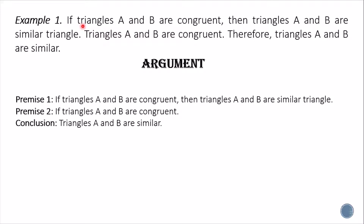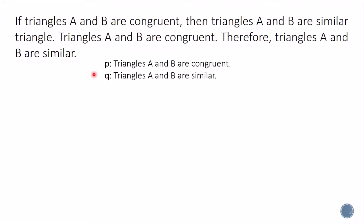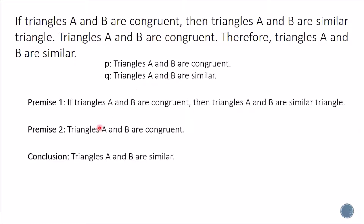Now let's symbolize this argument. First, identify the statements. 'Triangles A and B are congruent' will be our p. 'Triangles A and B are similar triangles' will be our q. The second premise and the conclusion use the same statements p and q respectively.